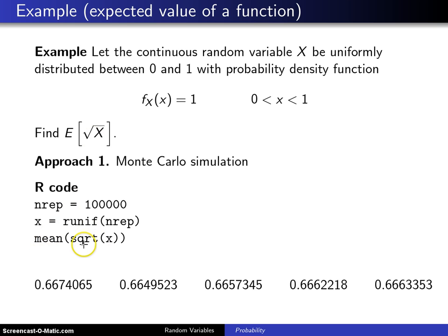Finally, the last thing we do is we take the square root of all 100,000 of those and then to mimic the expected value, we take the mean of those 100,000 square roots. And when you do that, you get 0.6674, and I ran it a second time, third time, fourth time, and then a fifth time.